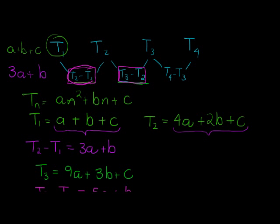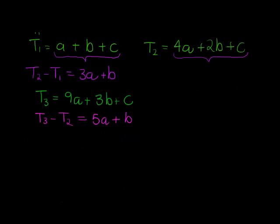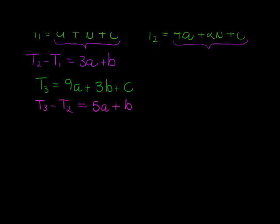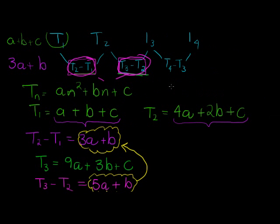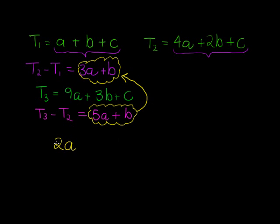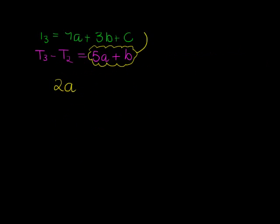When I take the second difference — subtracting one first-difference from the next — I take 5a plus b minus 3a plus b. The b minus b gives 0, and 5a minus 3a gives 2a. That's where the constant second difference of 2a comes from. Every subsequent pair will give the same result. That's why 2a equals the constant second difference.